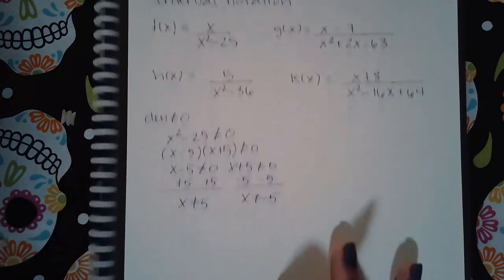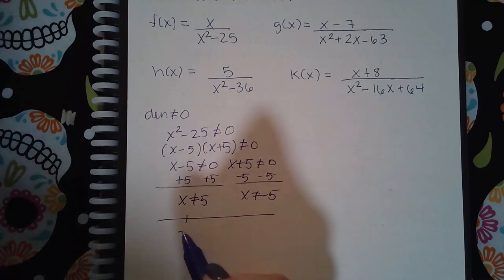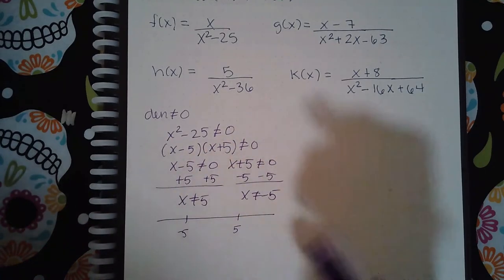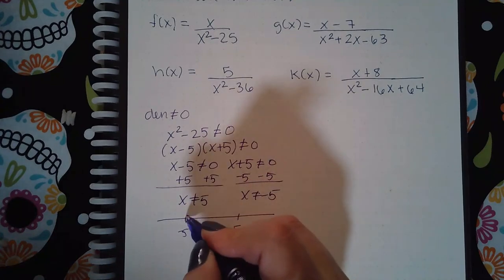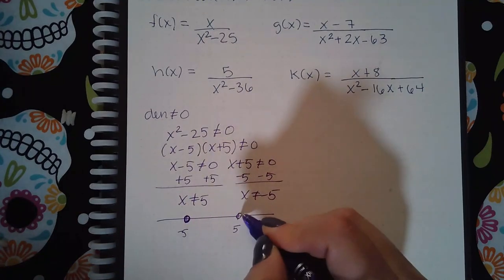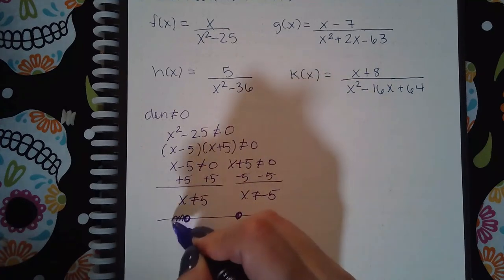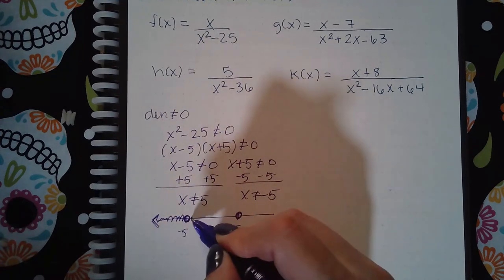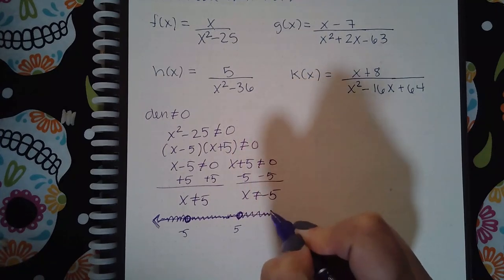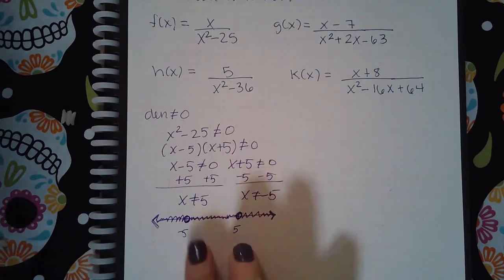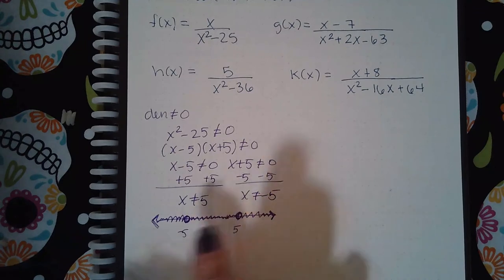So how does that look as far as an interval? Here's negative five, here's five, and I'm saying x cannot equal those values. So essentially what you have is a hole here and a hole there, but everything else works. So everything in between is good, and everything bigger than five is good. It's just five and negative five that are bad, where you don't have a y value.